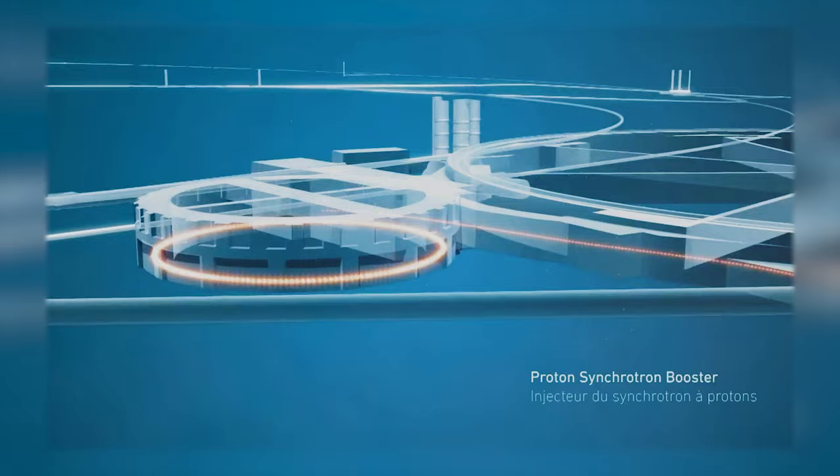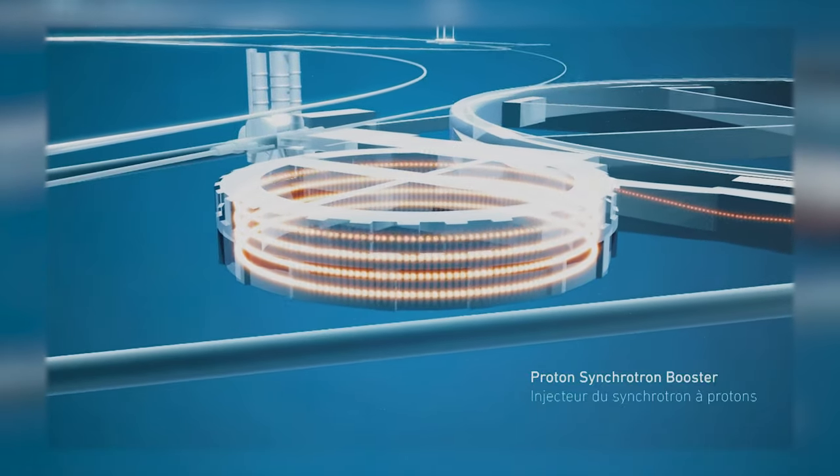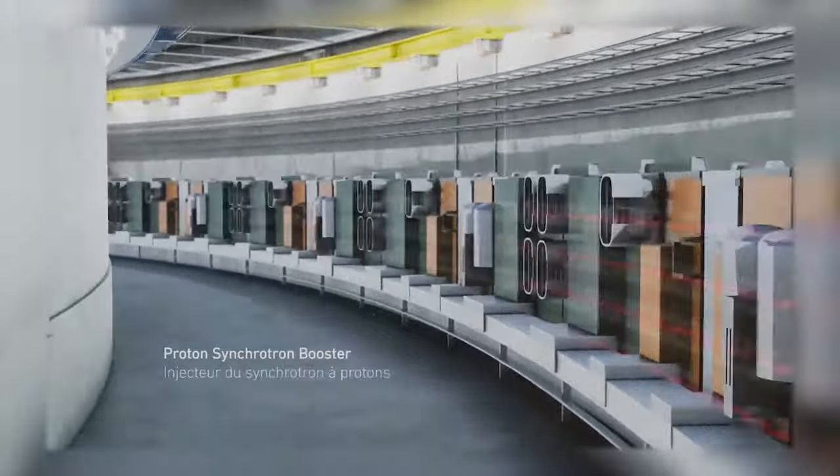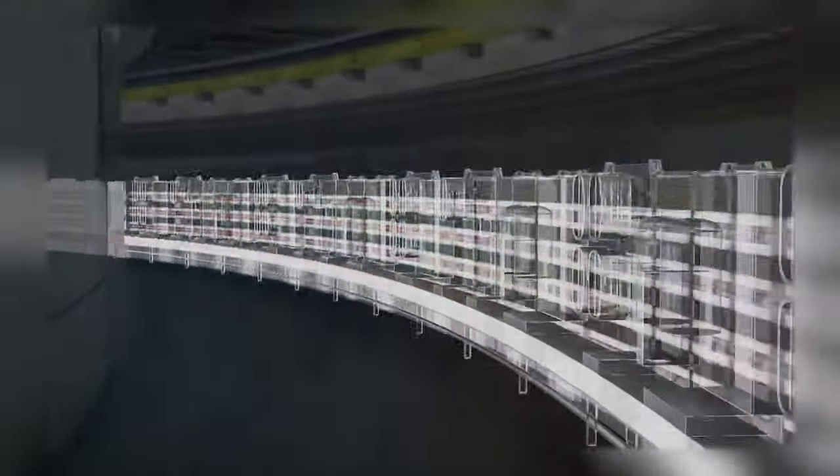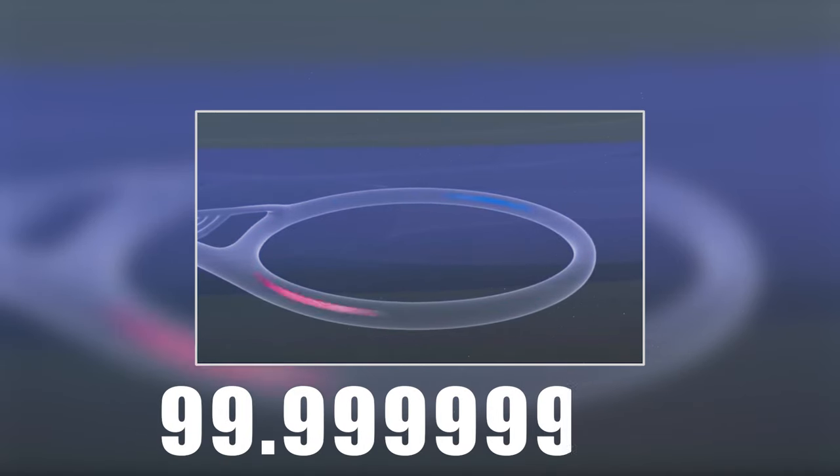At full power, trillions of protons can race around the accelerator ring 11,245 times in just one second. For comparison, these particles travel at 99.99999991 percent the speed of light.